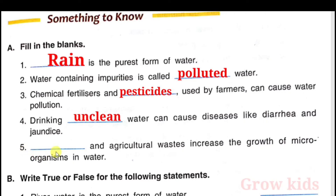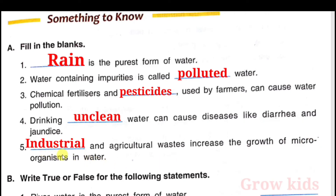Question 5: Industrial waste and agricultural waste increase the growth of microorganisms in water.